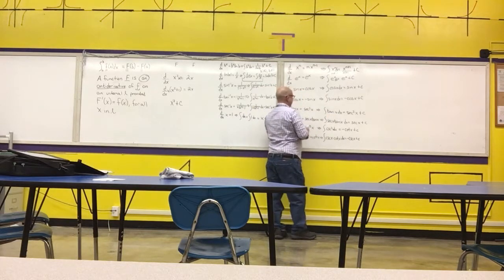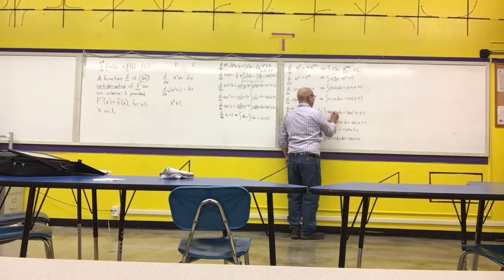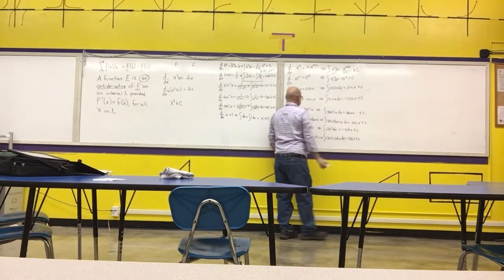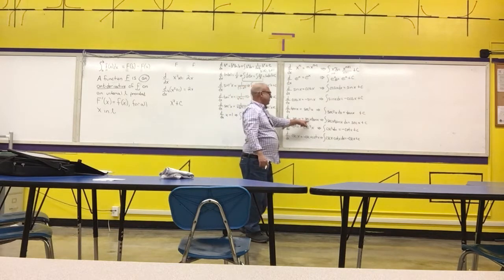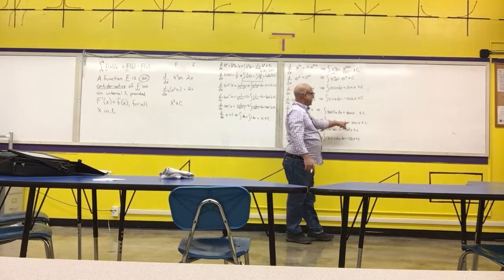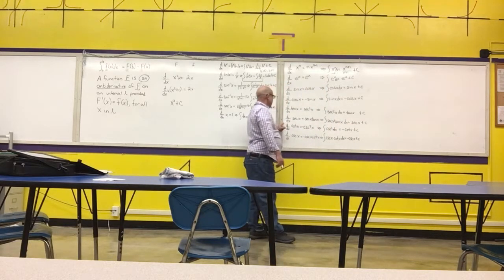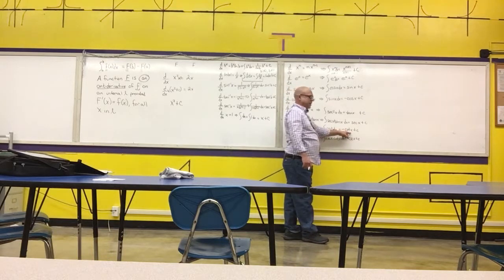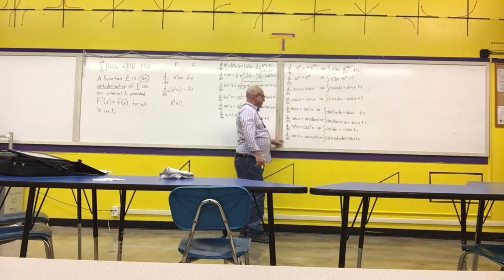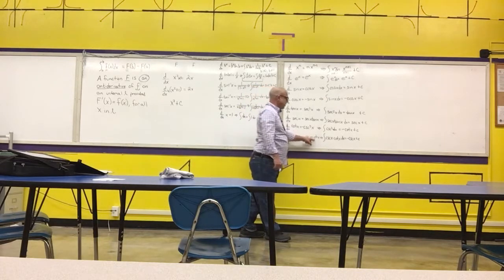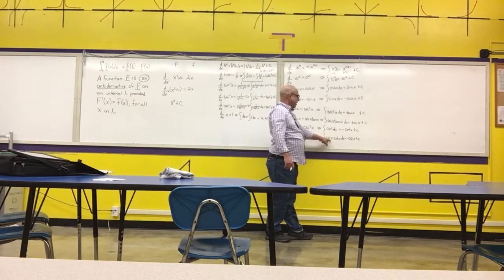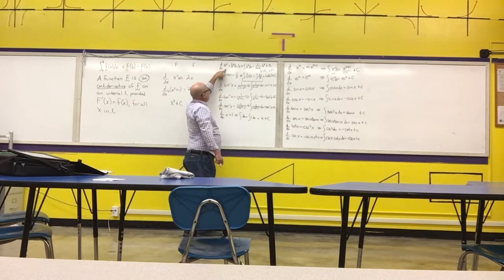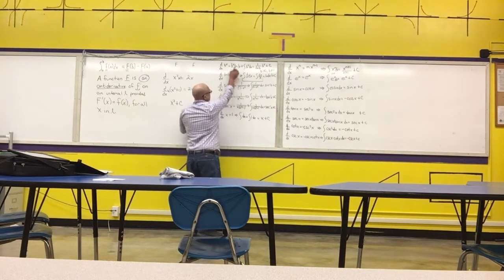The antiderivative of secant squared x is tangent x plus C. The derivative of secant is secant times tangent, therefore the antiderivative of secant times tangent is secant plus C. The derivative of cotangent is negative cosecant squared, therefore the antiderivative of cosecant squared is negative cotangent plus C. The derivative of cosecant x is negative cosecant cotangent. The derivative of b to the x is b to the x times natural log of b — we multiply by natural log of b.